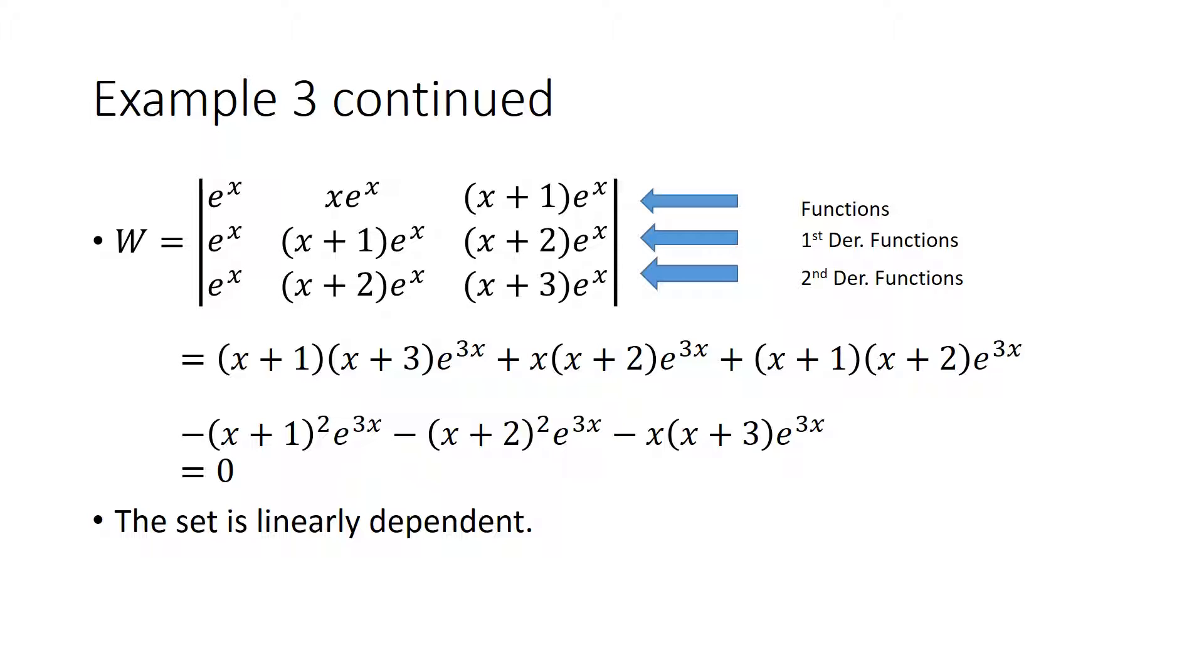So this set is linearly dependent. There is no x value that we can pick that would not make this Wronskian zero. Everything added up to zero explicitly. No dependencies whatsoever among the variables. So this set of functions is linearly dependent.